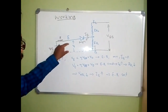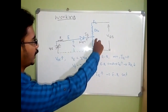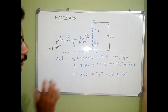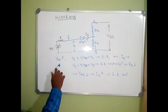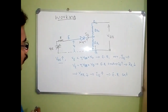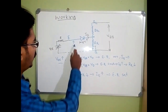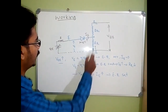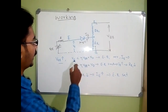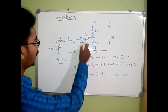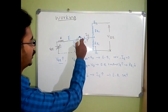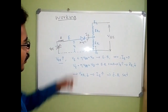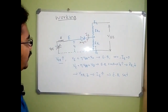Initially, UJT is in the turned-off condition. VE is zero and the voltage at point A is eta*VBB, so the emitter side has lower potential and the base side higher — this is reverse biased. When we increase VEE such that VE is less than eta*VBB plus VD, the emitter-base diode remains reverse biased, so IE is zero or only a small leakage current flows. The UJT is still in the turned-off condition.